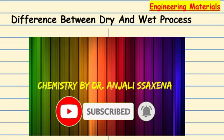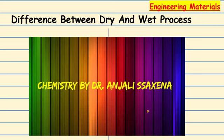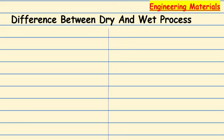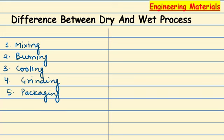In our previous video, we manufactured cement from a rotary kiln — Portland cement. We looked at 5 steps. The first step was mixing. The second step was burning, which we did in the rotary kiln. The third step was cooling, grinding, and packaging.